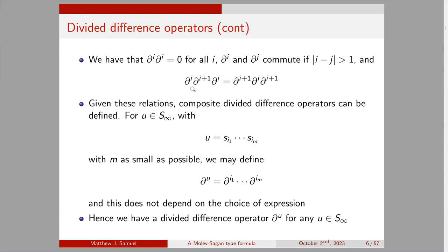Divided difference operators satisfy important relations: ∂_i² = 0, ∂_i and ∂_j commute if i and j differ by more than 1, and the braid relation ∂_i ∂_{i+1} ∂_i = ∂_{i+1} ∂_i ∂_{i+1} holds. Because of these relations, we can define composite divided difference operators ∂_u for any u in S_infinity by writing u as a reduced expression and taking the corresponding product of operators — the result does not depend on the choice of expression.